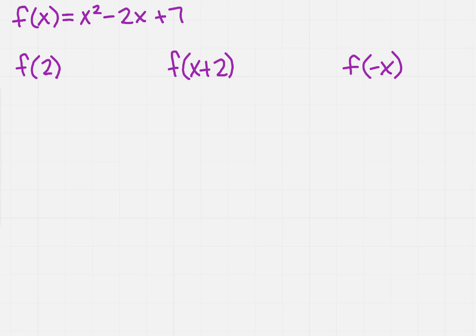The easiest way is that you can think of f of x as like y, so this would be the same thing as y equals x squared minus 2x plus 7.